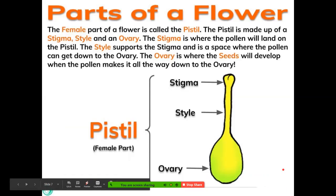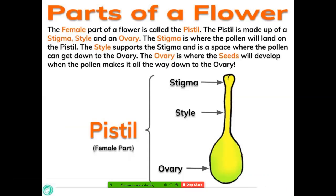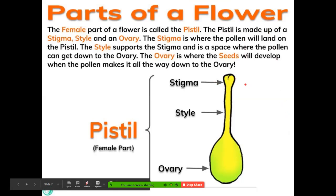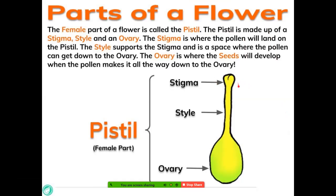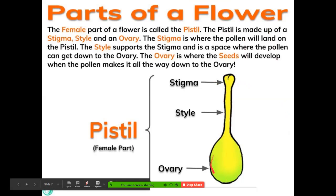The female part of the flower is called the pistil. The pistil is made up of a stigma, style, and an ovary. The stigma is where the pollen will land on the pistil — this is like the very top of it. The style supports the stigma and is a space where the pollen can travel down to the ovary — it's kind of like a straw, holding up the stigma. The ovary is where the seeds will develop when the pollen makes its way all the way down. So that's the female part of the pistil.